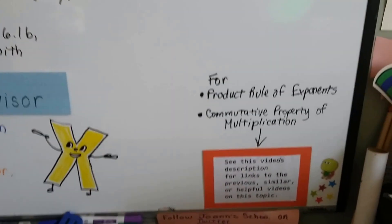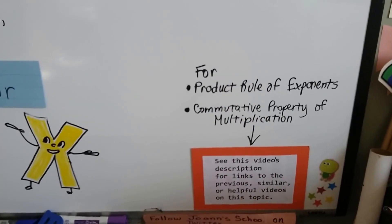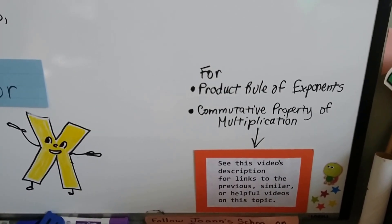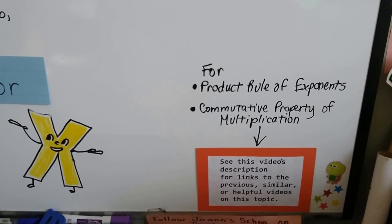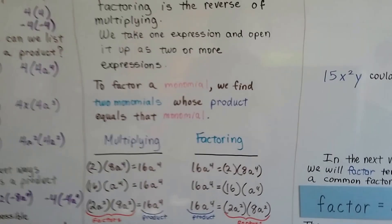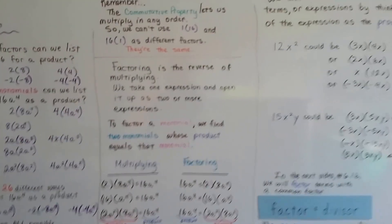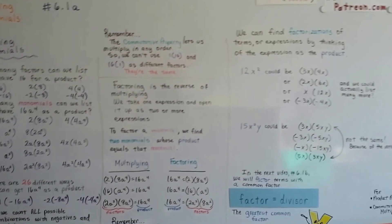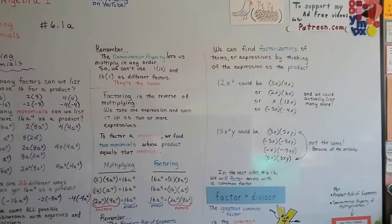If you want to have a link to the product rule of exponents to watch it real quick, or to go over the commutative property of multiplication, there's going to be a link in this video. So, I'll see you next video when we talk about factoring terms with a common factor. And I hope this was helpful. And I'll see you there. Bye.